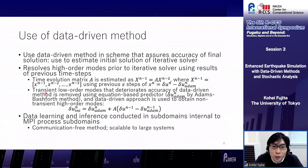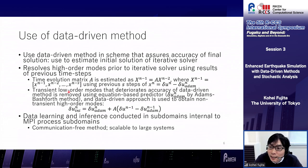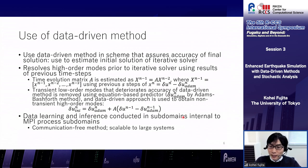In our method we use a data-driven method to estimate the initial solution of the iterative solver, where high-order modes are resolved prior to the iterative solver using results of the previous time steps. The time evolution matrix A is estimated as X_{n-1} = A * X_{n-2}. As transient low-order modes deteriorate the accuracy of the data-driven method, we remove these transient modes using an equation-based predictor — specifically ΔU is predicted using the Adams-Bashforth method — and the data-driven approach is used to obtain the non-transient high-order modes. Since data learning and inference can be conducted within MPI process subdomains, this becomes a communication-free method and is scalable to large systems.